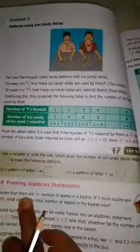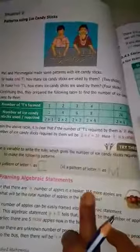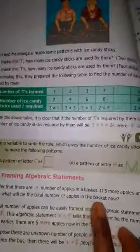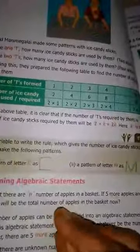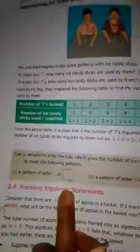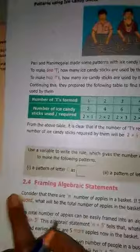Here's an example. Consider that there are n number of apples in the basket. If 5 more apples are added, what will be the total number of apples in the basket now? So in the basket there are n apples. 5 more - 'more' meaning add. So you can write this statement as n plus 5. This is the short form, the algebraic statement.